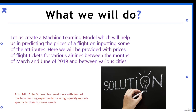Let me tell you what AutoML is. AutoML enables developers with limited machine learning expertise to train high quality models specific to their business needs. If you don't have much knowledge about machine learning, you can use automated machine learning to do all the work a data scientist does, like testing different models, hyper-tuning them, checking their accuracy, and selecting the best model.